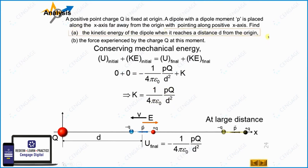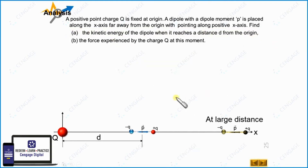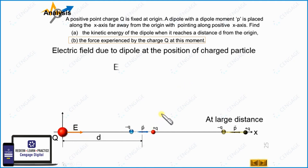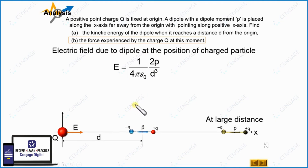So we have calculated part A. Now let us move to part B: the force experienced by charge Q at this moment. The electric field due to the dipole at the position of the charge particle — since the charge particle is at the axial position of the dipole at distance d — at the axial position the electric field vector is parallel to the dipole moment vector, pointing in the rightward direction. The magnitude of this electric field is E = 2p/(4πε₀d³). The force experienced by the charge particle is F = QE.